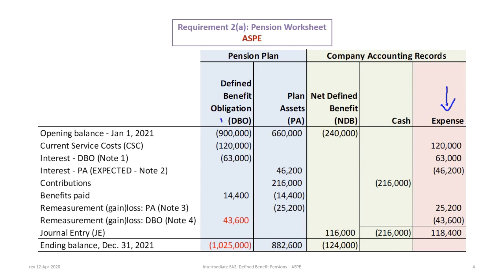We have the DBO that we calculated based on the beginning balance of 900,000. We added the service costs, we added the interest on the DBO based on the opening balance, we took out the benefits paid, and then we plugged or determined the remeasurement gain or loss. In this case, it was a remeasurement gain. We then proceeded to work through the plan assets.